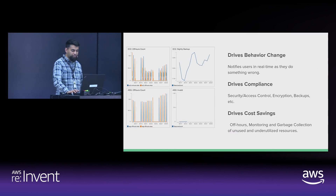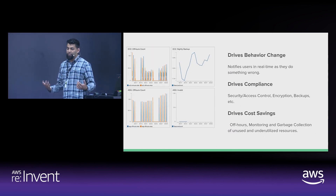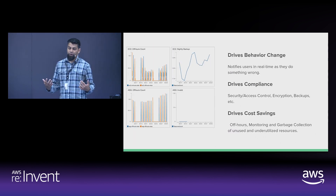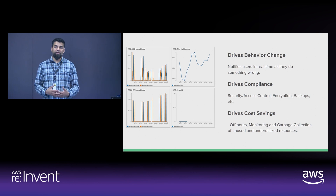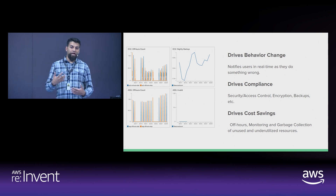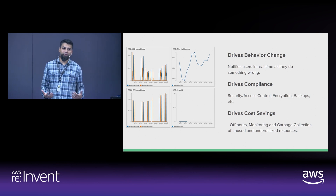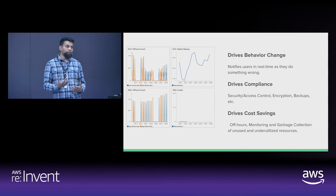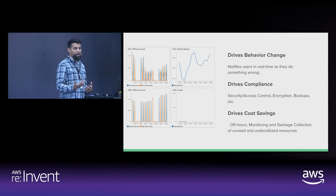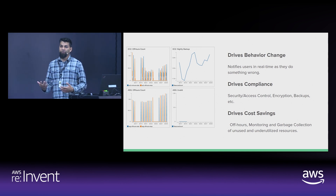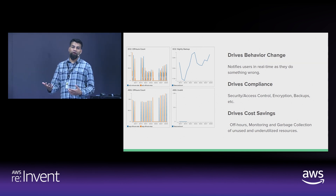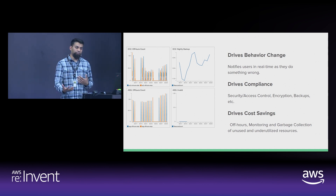Custodian does that, and this is really part of the cloud transformation for an organization. The biggest challenge as you go into the cloud is driving the behavior change and knowledge change to take advantage of it. Custodian tries to help drive that behavior change by notifying application team developers in real time when they're doing something wrong, what they did wrong, how they can change that behavior — and it also fixes the problem.